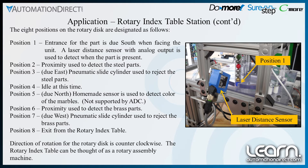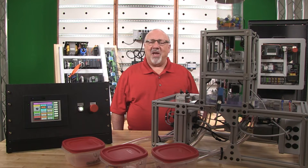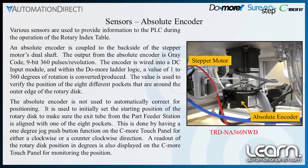The rotary index table can be thought of as a rotary assembly machine. Various sensors are used to provide information to the PLC during operation. An absolute encoder is coupled to the back side of the stepper motor's dual shaft. The output from the absolute encoder is grey code, 9-bit, 360 pulses per revolution. The encoder is wired into a DC input module, and within the DoMore ladder logic, a value of 1 to 360 degrees of rotation is converted and produced. This value is used to verify the position of the 8 different pockets around the outer edge of the rotary disk.